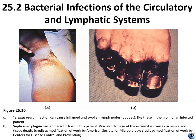Because the lymph is delivered to the subclavian veins via the right lymphatic duct and the thoracic duct, it ultimately enters the bloodstream, and the bacteria within the lymph are capable of multiplying in the blood, causing septicemia — septicemic plague — followed by septic shock. Septicemic plague can occur when bacteria enter the bloodstream directly through a flea bite or as a complication of bubonic or pneumonic plague. All forms of plague can be treated with antibiotics in early stages, but if untreated, septicemic plague is universally fatal. Figure 25.10 shows buboes in the groin of an infected patient and the necrotic toes of a patient with septicemic plague.